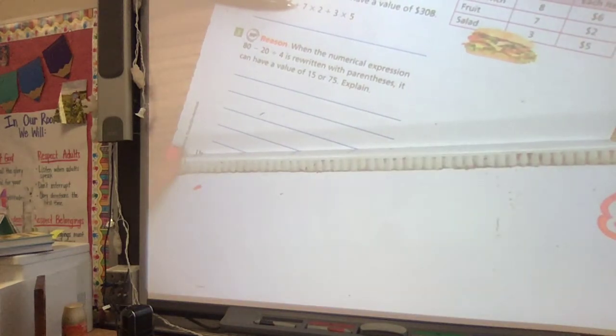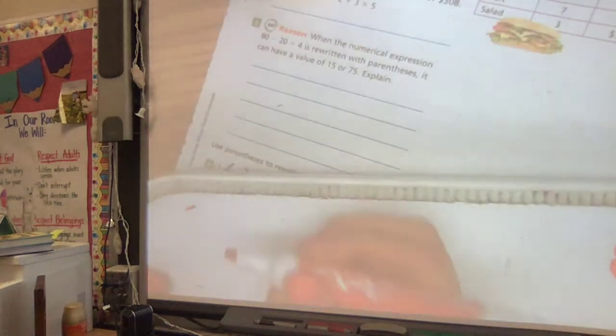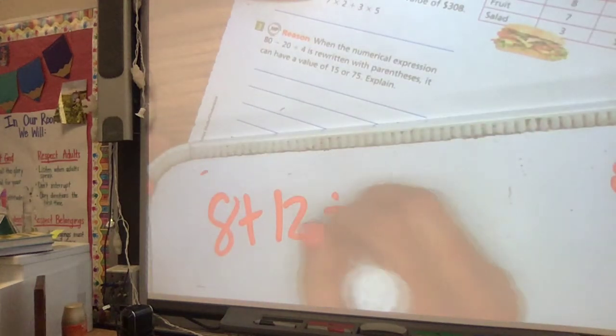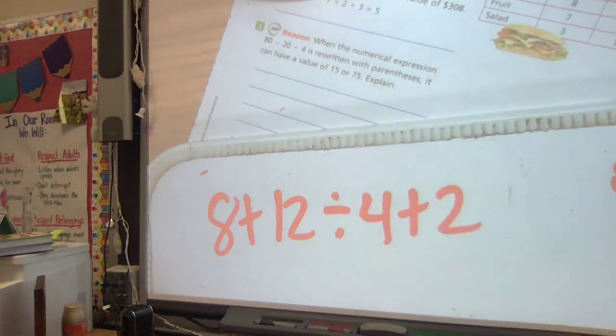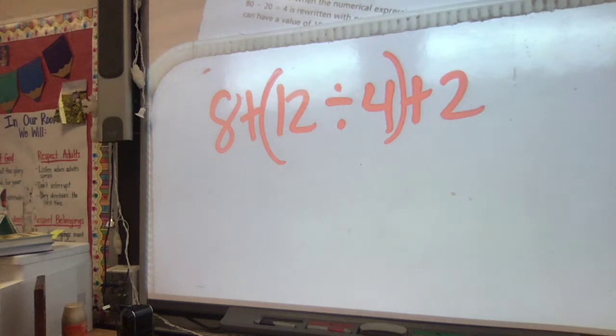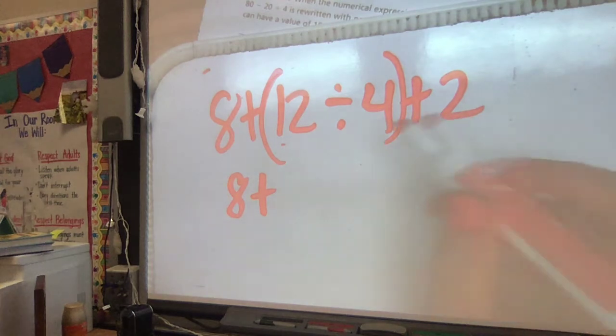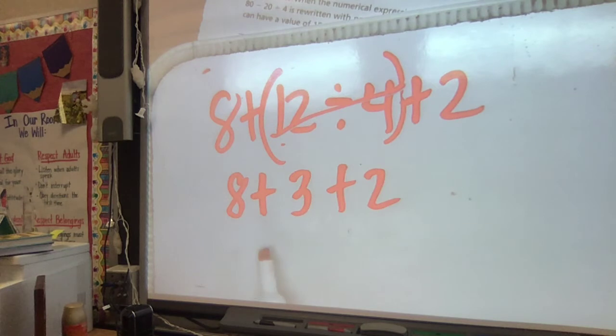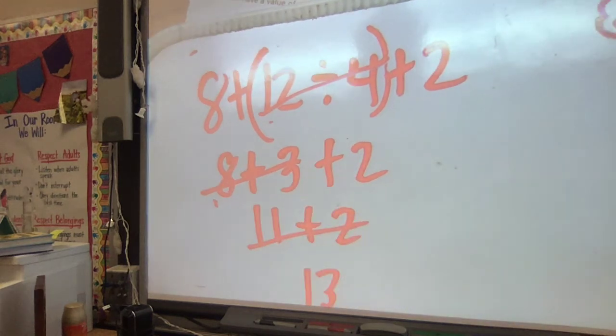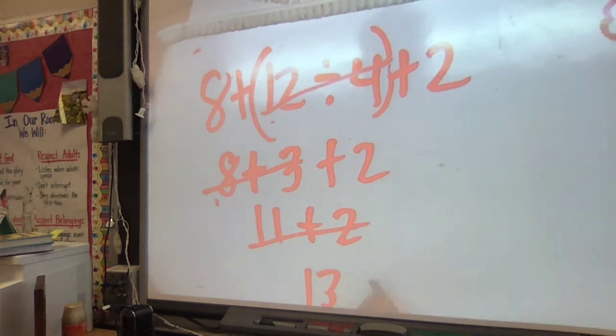That's not the answer. So let's rewrite it and try another way. 8 plus 12 divided by 4 plus 2. I want to get the answer 10, so maybe I can put my parentheses around these two numbers. 8 plus, I know I do parentheses first, 12 divided by 4 is 3 plus 2. Then I would add 8 plus 3 is 11 plus 2. 11 plus 2 is 13. That did not give me my answer of 10, so that's not correct.